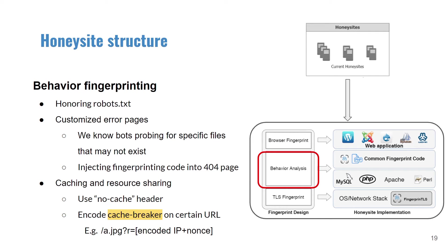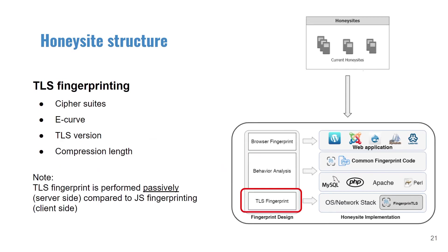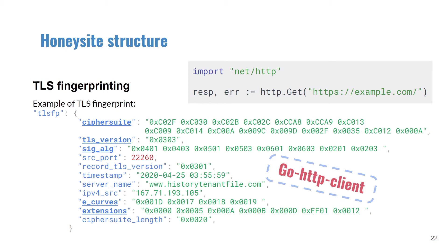The caching and resource sharing behavior is another aspect of behavioral fingerprinting. To make sure clients are not sending the same URL over and over again, we utilize a cache breaker. At the bottom level, we apply TLS fingerprinting techniques on the OS and network stack. Different TLS libraries have different characteristics, which allow us to attribute requests back to the same software or machine. For example, from the cipher suite, signature algorithm, E-curves and extensions, we can identify that this TLS handshake is initiated from the basic Go language HTTP request GoHttpClient.